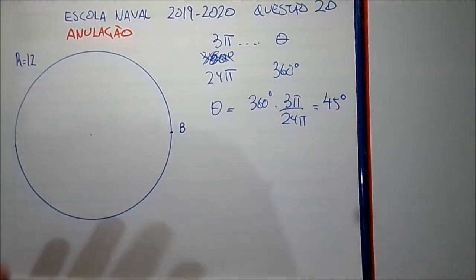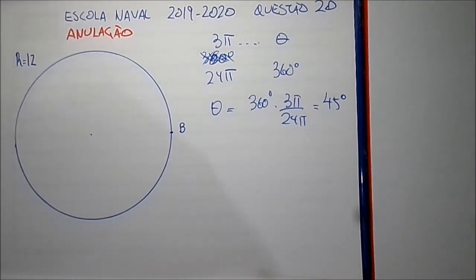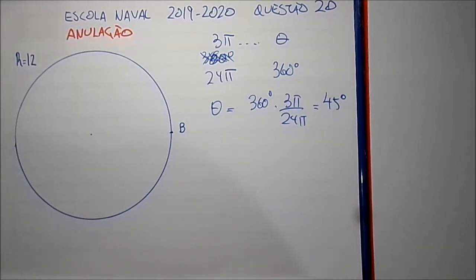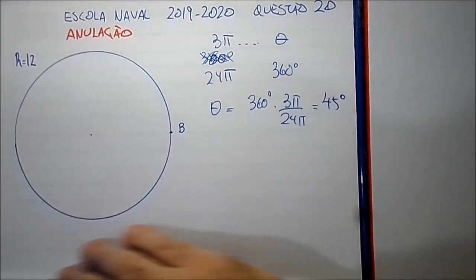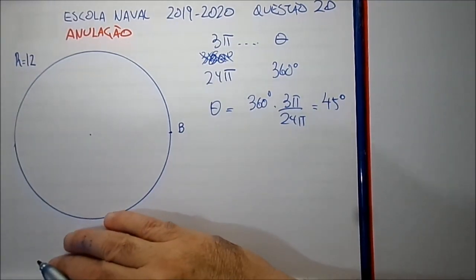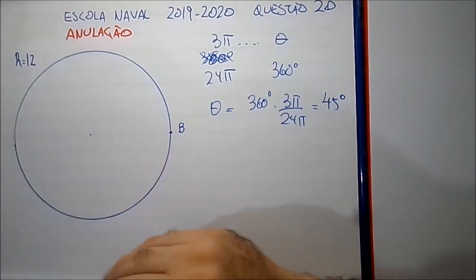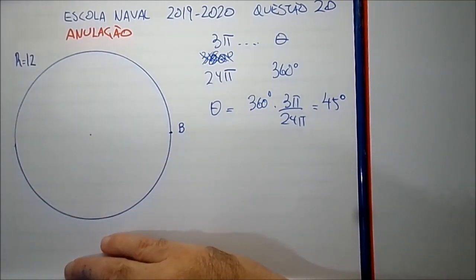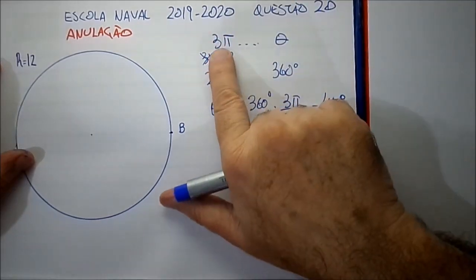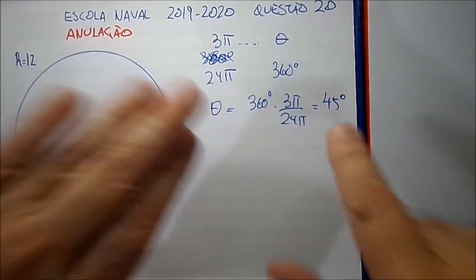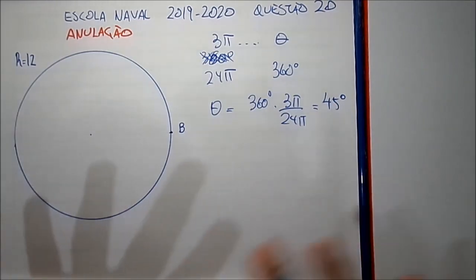Essa figura está fora de escala porque está sugerindo um arco AB que corresponde a um ângulo central de em torno de 90 a 120 graus visualmente, mas isso é figura fora de escala. Nenhuma figura em prova tem obrigação de estar na escala, e podem colocar fora de escala de propósito para confundir. Ele deu o raio e o comprimento do arco, então você tem tudo para calcular o valor exato e não usar golpe de vista.